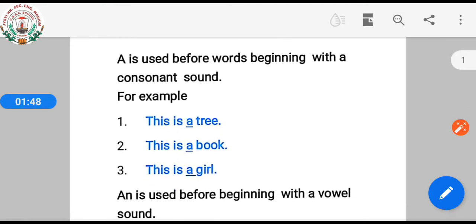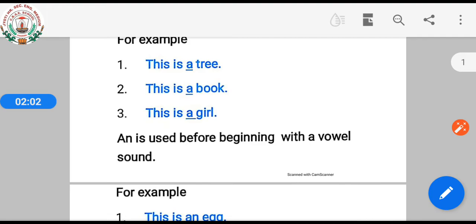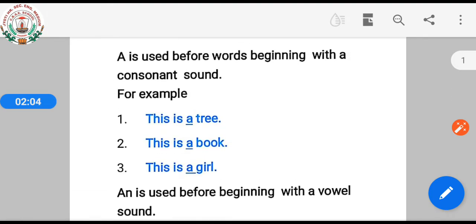For example, this is a tree, this is a book, this is a girl. Here we use 'a' because we hear the consonant sound.